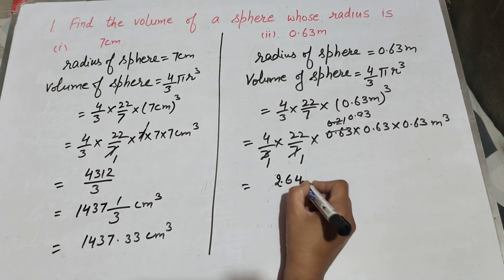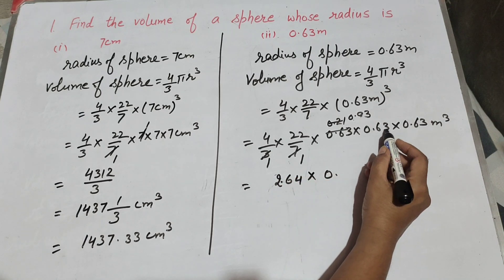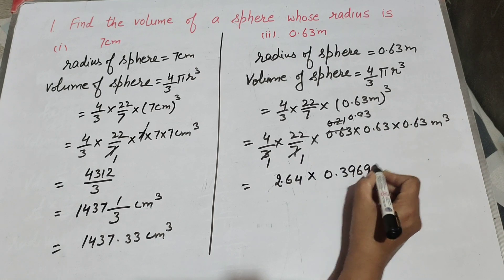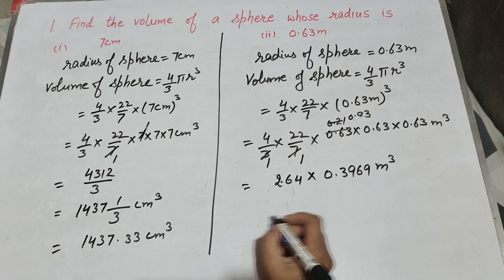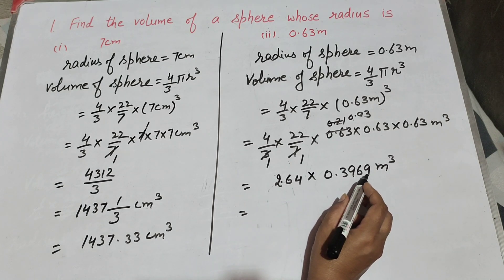2.64. Multiply 0.63 times 0.63. On multiplying them we get answer 0.3969 meter cube. Now 2.64 times 0.3969.